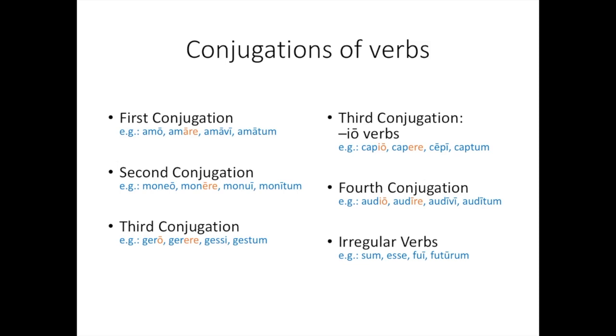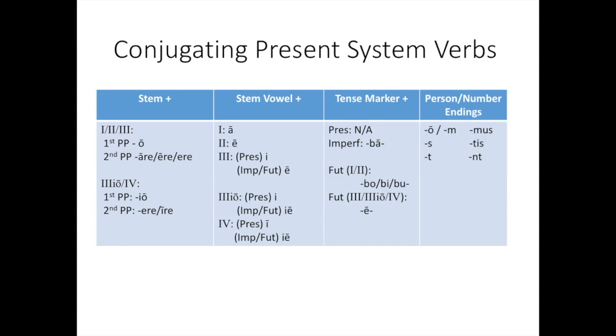And then there are the irregular verbs that you'll learn about in later chapters. But you already know about sum, esse and possum, posse. So let's talk a little bit about how third IO and fourth conjugation verbs are similar. You remember this basic equation to help you conjugate all your verbs. They're for the present, imperfect, and future tenses.